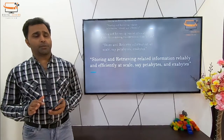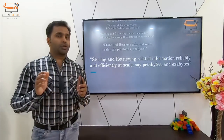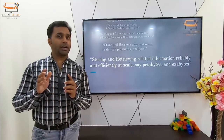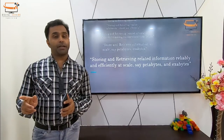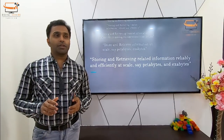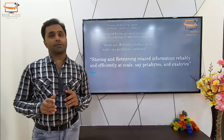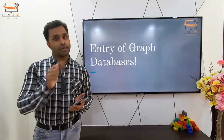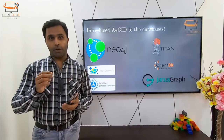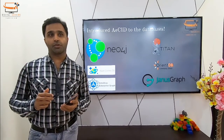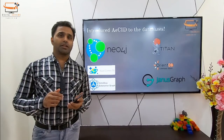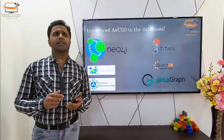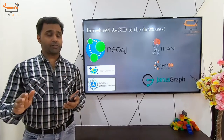This is when the problem definition started getting redefined. We now wanted to store and retrieve related information reliably and efficiently at scale — say petabytes and exabytes. We are mixing the requirement of scale with relational database requirements. To address this problem, we have to enter graph databases. Neo4j was the pioneer — they started around 2007 and launched Neo4j 1.0 in 2010, and since then Neo4j has been ruling the entire graph space.